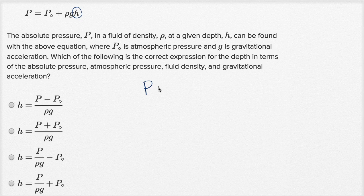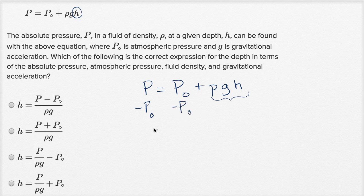So we have P is equal to P sub zero plus rho times g times h. Now to solve for h, I'd want to isolate this term that contains h on the right-hand side, so let me subtract P sub zero from both sides. Subtract P sub zero, subtract P sub zero.